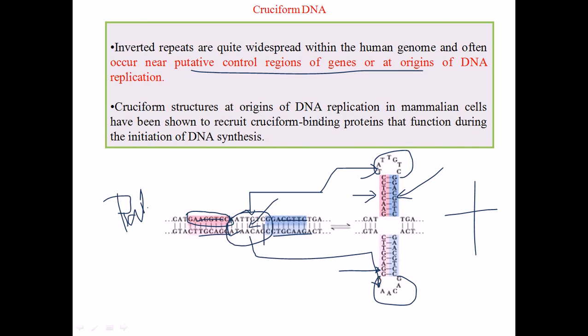it will recruit some of the proteins which are called the DNA cruciform binding protein. It will in turn bind to the cruciform DNA and finally helps this DNA to be replicated properly. That's the function of cruciform DNA.